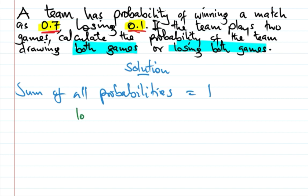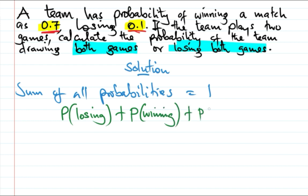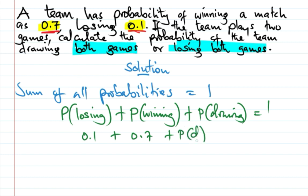P(losing) plus P(winning) plus P(drawing) equals one. So P(losing) is 0.1, P(winning) is 0.7, plus P(drawing) equals one. So 0.8 plus P(drawing) equals one, meaning P(drawing) equals one minus 0.8, which is 0.2.